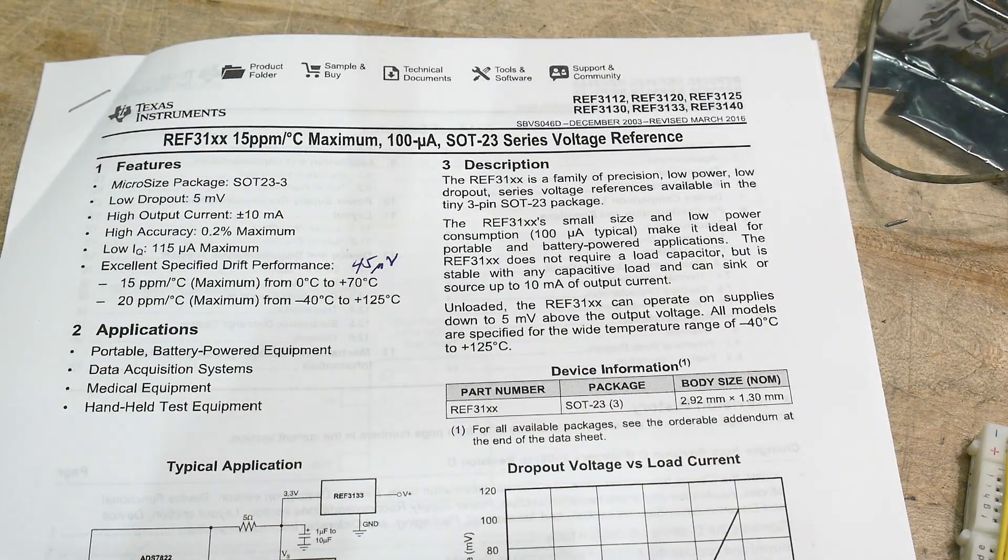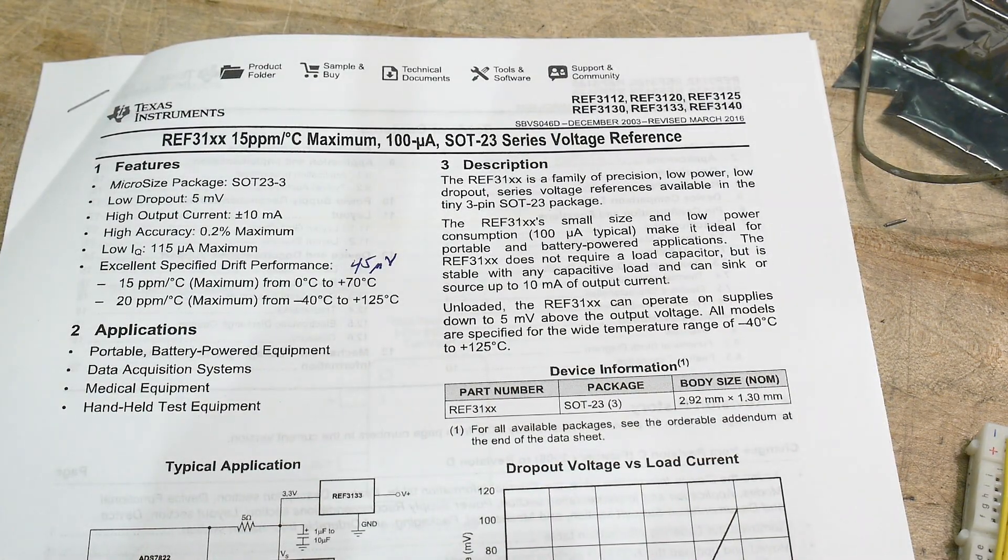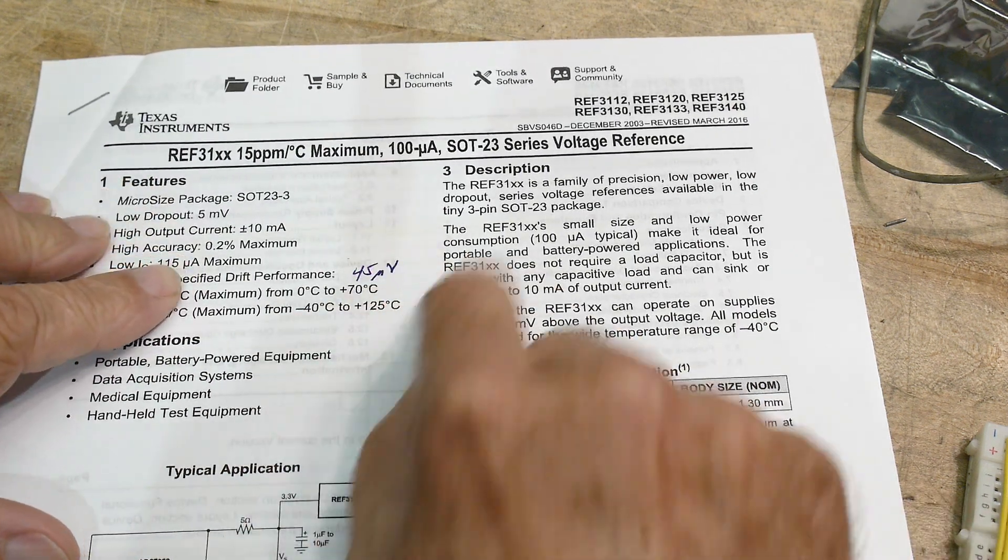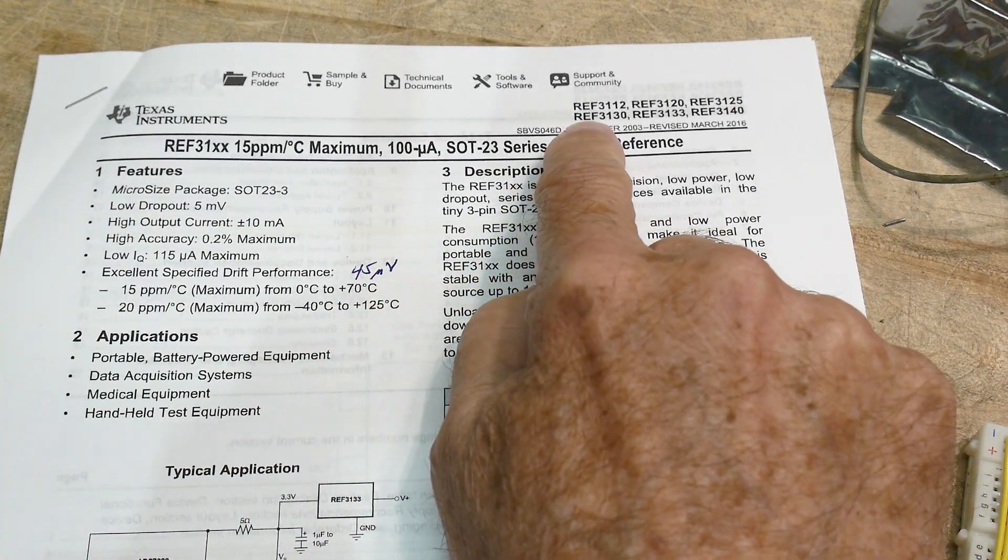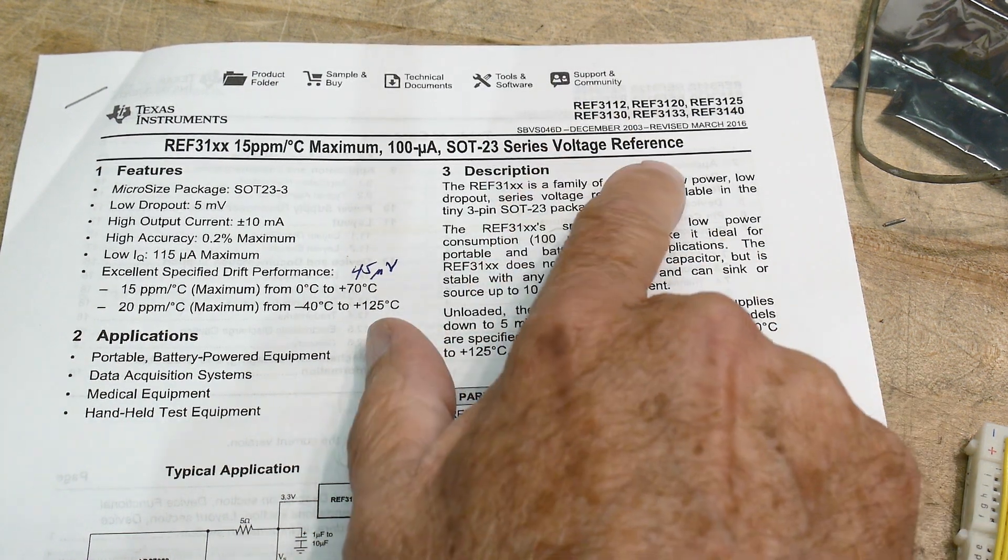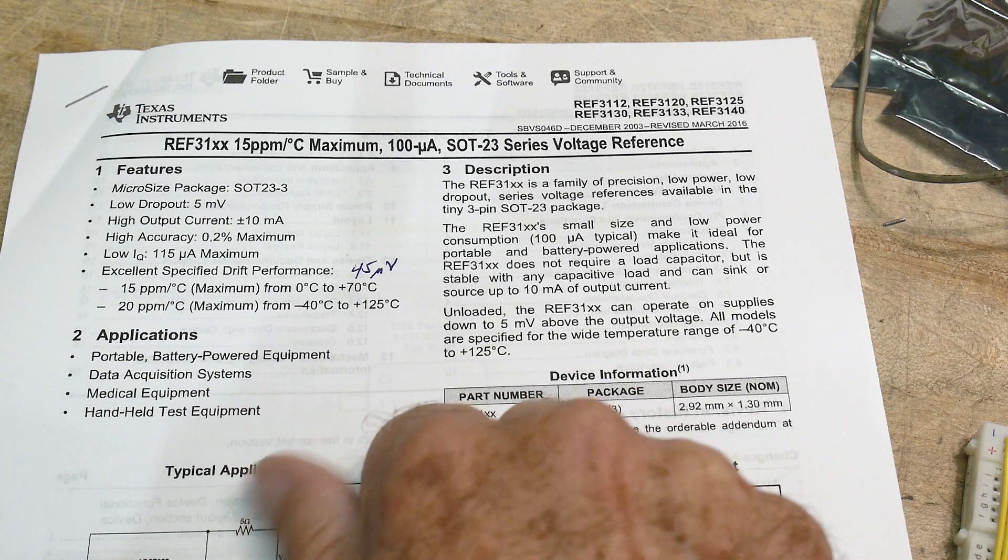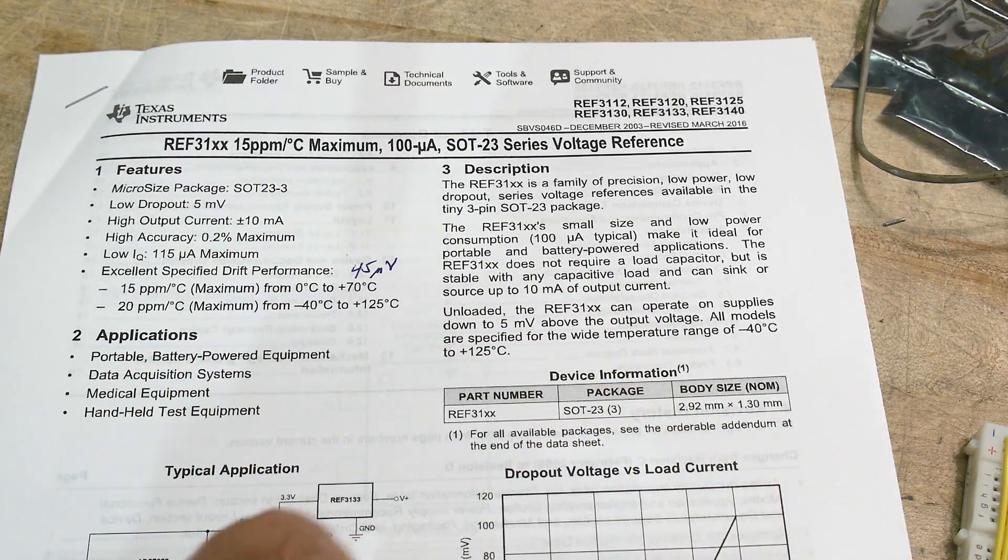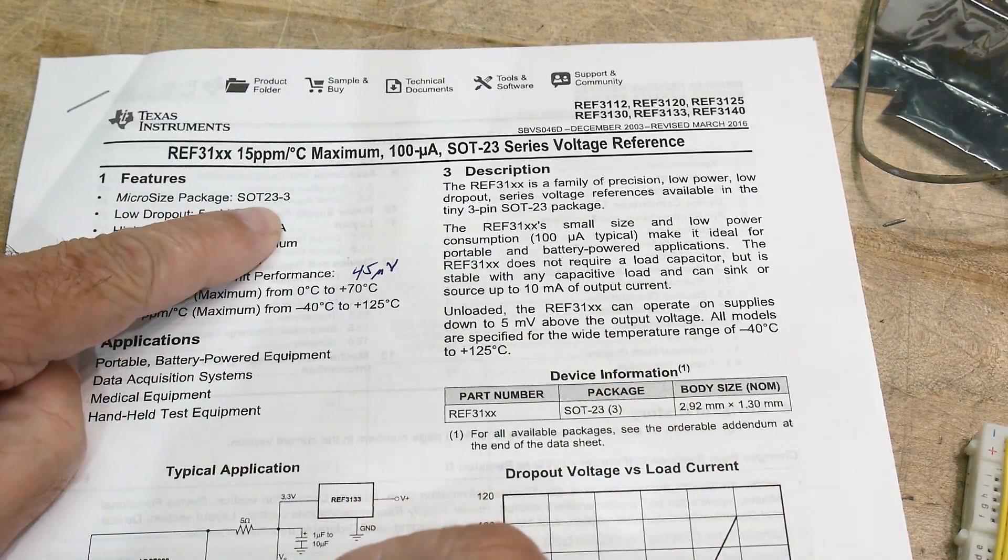Alright, chip of the day. Everybody loves chip of the day. This one's going to be a REF3130, and it is a voltage reference. That's why it says REF. This is from Texas Instruments. It is micro-sized, so it's going to be a SOT-23.